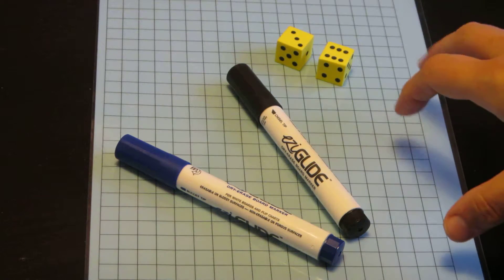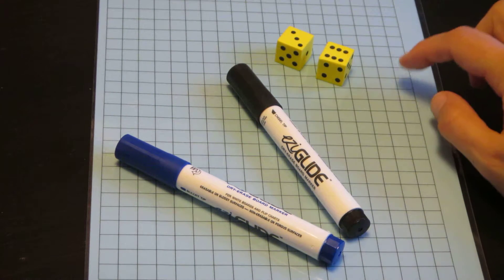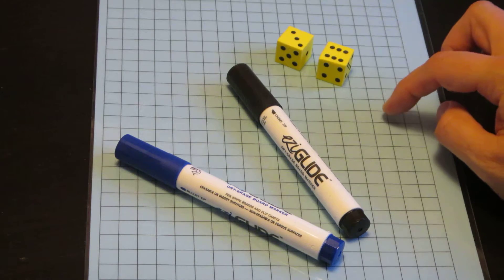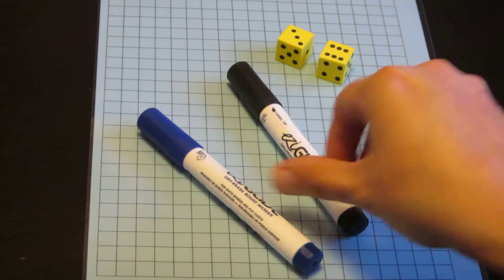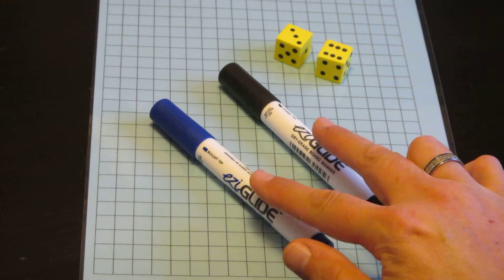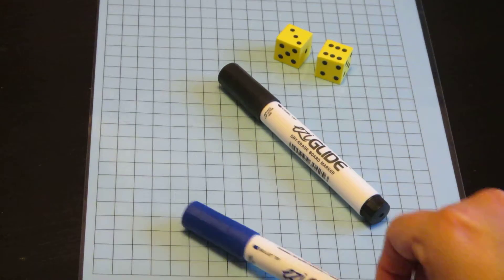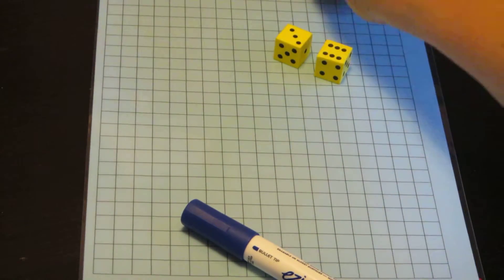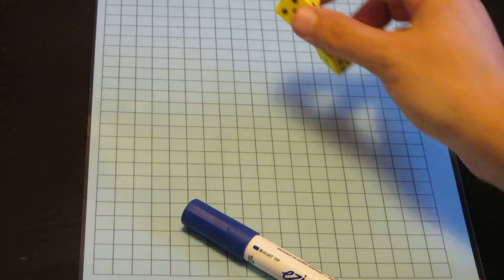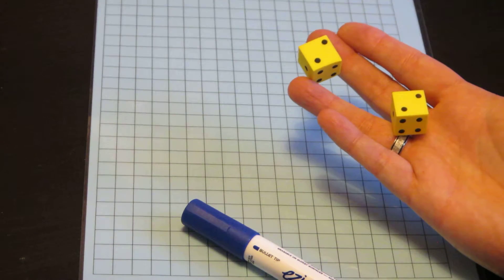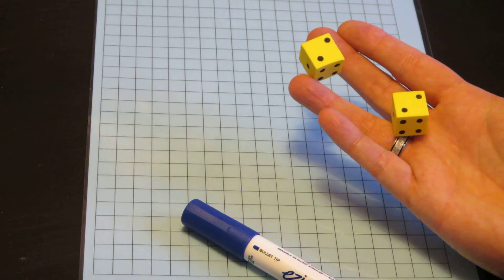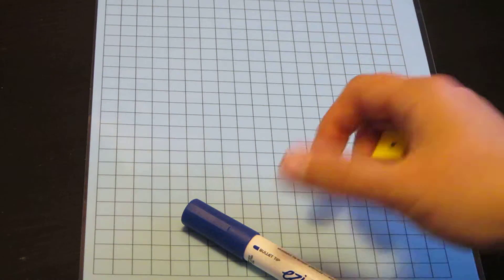Okay, so for this game you need your squared paper. I suggest you use the squared paper with the bigger squares. Two WoWo board pens, notice I've chosen two different colours. I'm going to play blue, my partner's going to play black. And you need two dice. You might want to change to three dice as you get really good. But to begin with we're just going to play with two dice.